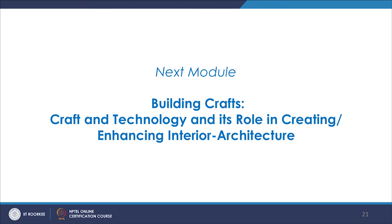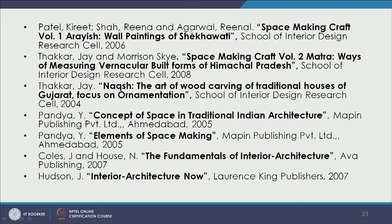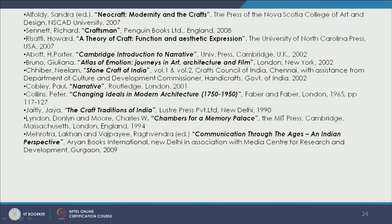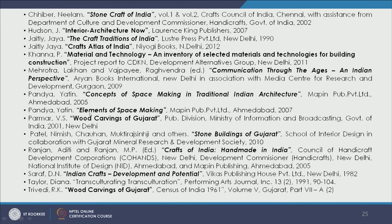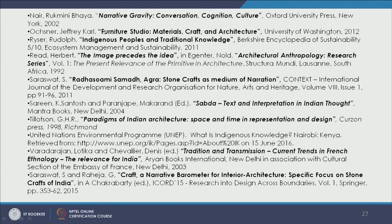Our next module will talk about building crafts, craft and technology and its role in creating and enhancing interior architecture — we will see examples of interior architecture and how building crafts could be understood in terms of space making. For references, important ones for this module and the next include books on space making crafts such as surface wall paintings, and 'Matra' on vernacular built forms of Himachal Pradesh which is majorly structural. Other key references include 'Material, Craft and Architecture.'